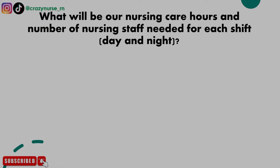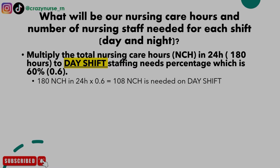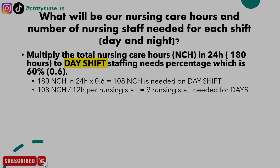Next, we determine nursing care hours and number of nursing staff needed for each shift. For the day shift, multiply total nursing care hours in 24 hours (180) by the day shift staffing percentage of 60% (0.6): 180 × 0.6 = 108 nursing care hours for day shift. Then divide 108 by 12 hours per nursing staff, since each staff works a 12-hour shift. That gives us 9 nursing staff needed for day shift.